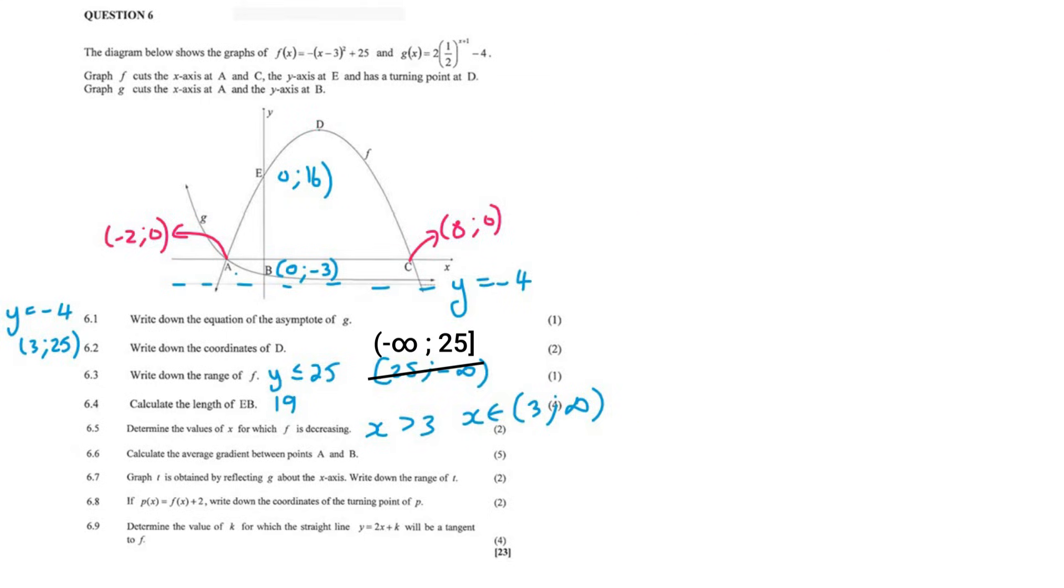Now we have to work out the average gradient. Remember that the average gradient is m equals y2 minus y1 over x2 minus x1. We're doing it between a and b. The coordinates are minus 2 and 0, and 0 and minus 3. So 0 minus minus 3 over minus 2 minus 0, which gives us negative 3 over 2, or negative 1.5.